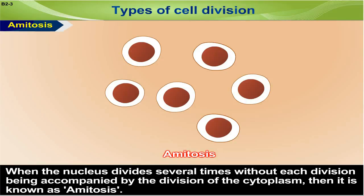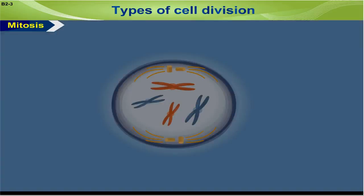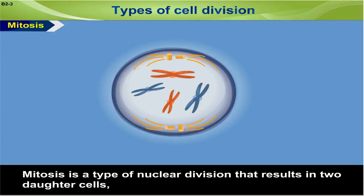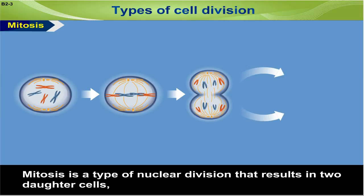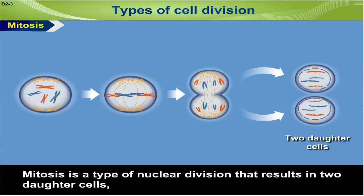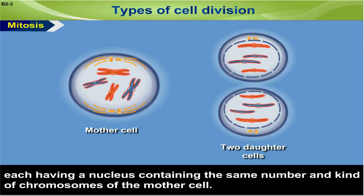Mitosis is a type of nuclear division that results in two daughter cells, each having a nucleus containing the same number and kind of chromosomes as the mother cell.